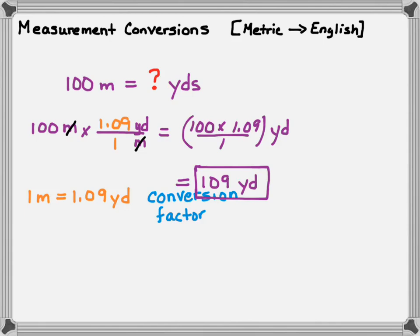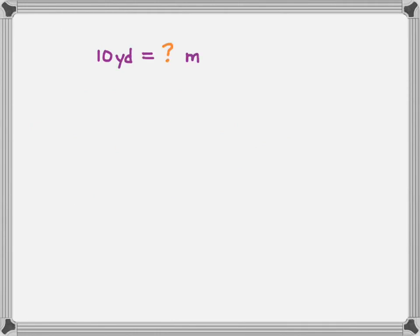Let's do another one in the other direction: I give you 10 yards and I want to know how many meters that is equal to. I set up my equation with 10 yards times — this time putting yards on the bottom and meters on top so that the cancellation will go properly. I go back to my conversion factor, which is 1 meter is equal to 1.09 yards.